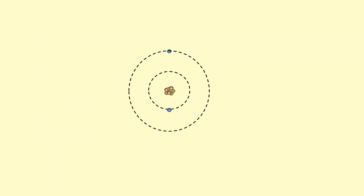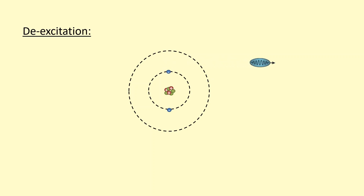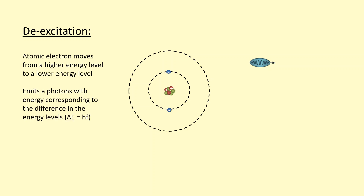Once these electrons have been excited to a higher energy level by either a collision or absorbing a photon, in their higher energy level they're unstable. They want to move back down to their lower energy level. This process is called de-excitation, and when this occurs, a photon is emitted with energy corresponding to the difference in energy between the two energy levels the electron moved from.